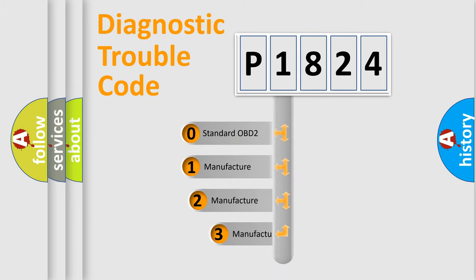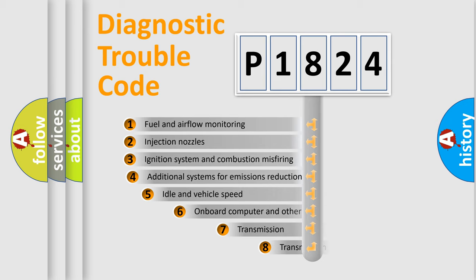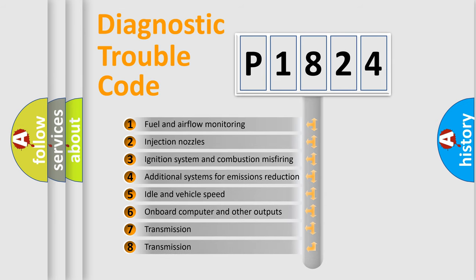If the second character is expressed as zero, it is a standardized error. In the case of numbers 1, 2, or 3, it is a manufacturer-specific expression of the car-specific error. The third character specifies a subset of errors.